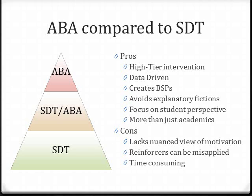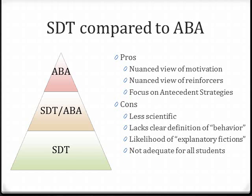Comparing ABA to SDT: ABA is adequate for students with significant issues, is data-driven, creates behavior support plans, avoids explanatory fictions like 'that student is just mean' — which is not a function of behavior — and can handle more than just academic engagement. However, it really lacks SDT's nuanced views of motivation and reinforcement, and it can also be very time-consuming. SDT provides that nuanced view of motivation and reinforcers that people trained only in ABA could really benefit from, and it focuses on prevention. But I don't feel that SDT alone is adequate for all students, particularly those with behavioral disabilities. I see it more as a mindset or a teaching worldview than a set of specific techniques, which makes it perfect for most teachers dealing primarily with Tier 1 and Tier 2 students. But often people trained only in SDT reject ABA as bribery when special educators are consulting with them, which can be very frustrating.